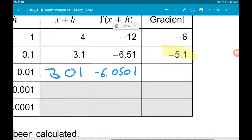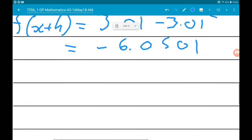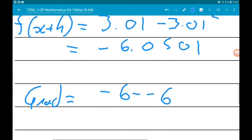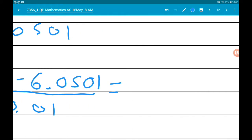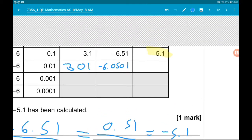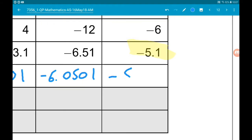The gradient is going to be -6 minus -6.0501. Stick that in your calculator and you should get -5.01. Don't forget to put it in the table, -5.01.